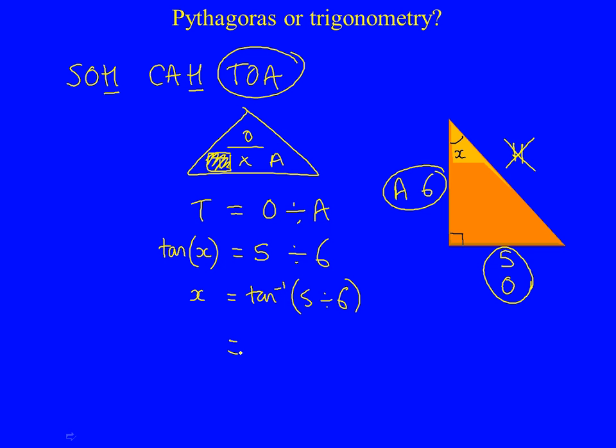And when you work this out on a calculator, pressing the shift before you press tan, 5 divided by 6, you'll get the answer of 39.8 degrees, which is our answer.